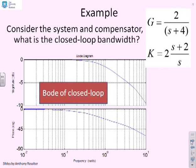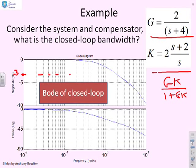Here's an example. You'll see I've got system G, 2 over s plus 4, an associated compensator, 2 times s plus 2 over s. I've done the Bode of the closed-loop transfer function, which in this case would be GK over 1 plus GK. Here it is. If I want to know what the bandwidth is, I simply do the 3dB drop-off. There's minus 3. I'll draw my line across. What do you get? You draw yourself down here, and that's about 2 radians per second. So in this particular case, you could confidently say that the bandwidth is about 2 radians per second.